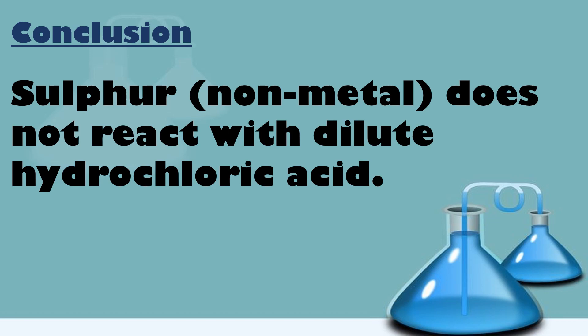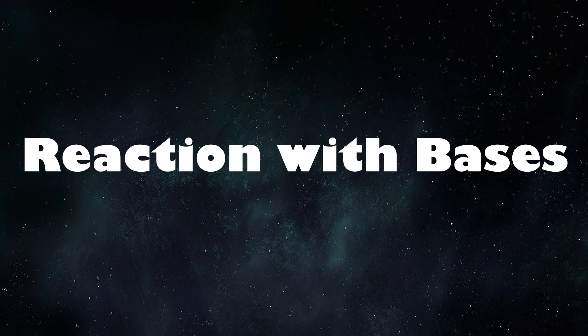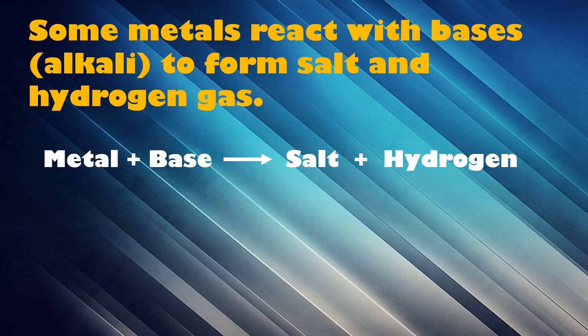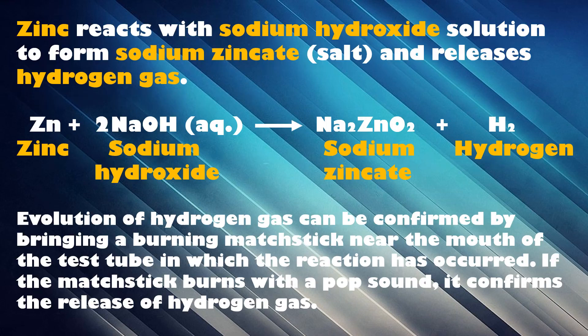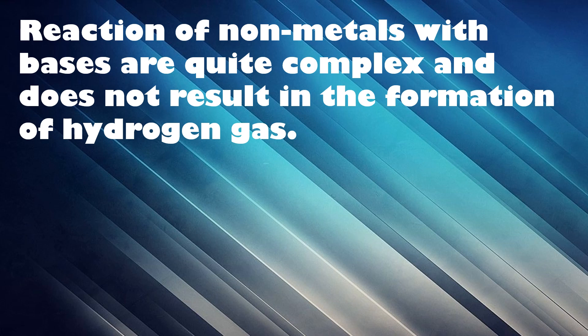Reaction with bases: Some metals react with bases to form a salt and hydrogen gas. For example, zinc reacts with sodium hydroxide solution to form sodium zincate and releases hydrogen gas. The evolution of hydrogen gas can be confirmed by bringing a burning matchstick near the mouth of the test tube — if it burns with a pop sound, it confirms the release of hydrogen gas. On the other hand, reactions of non-metals with bases are quite complex and do not result in the formation of hydrogen gas.